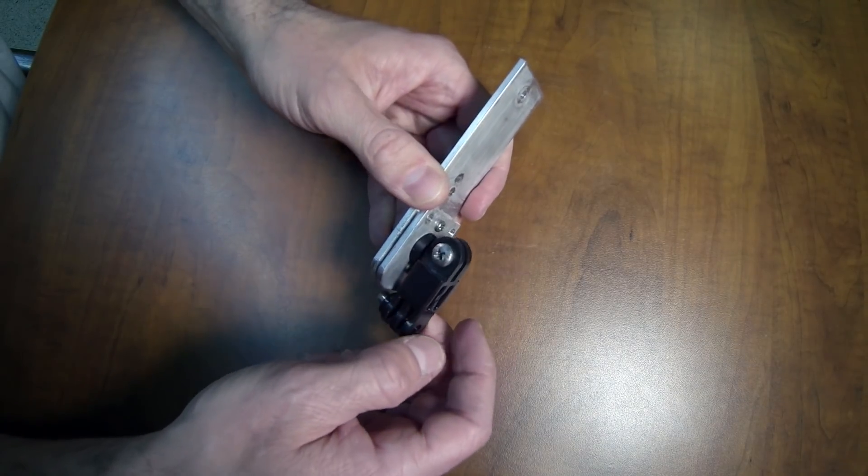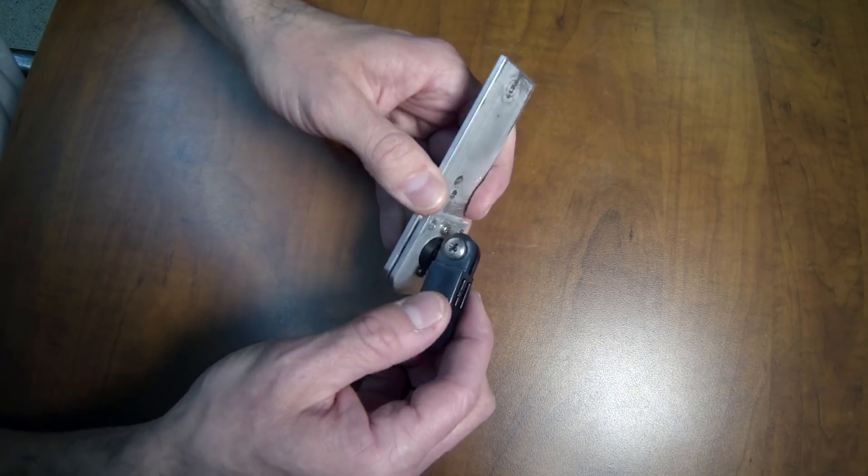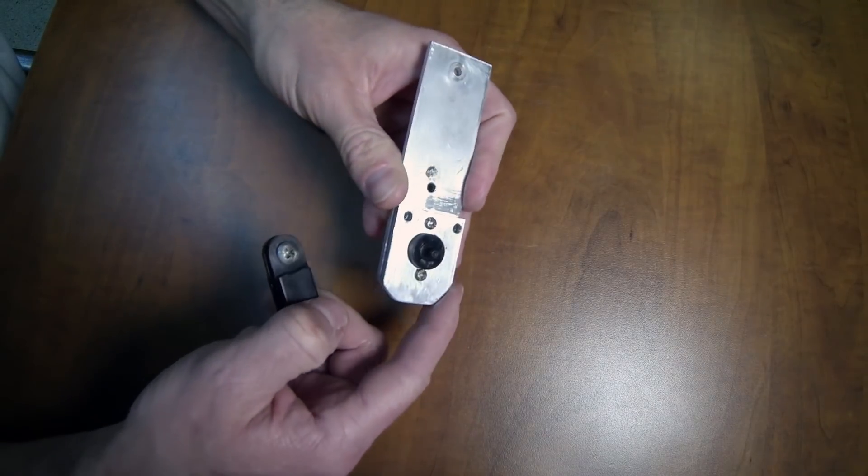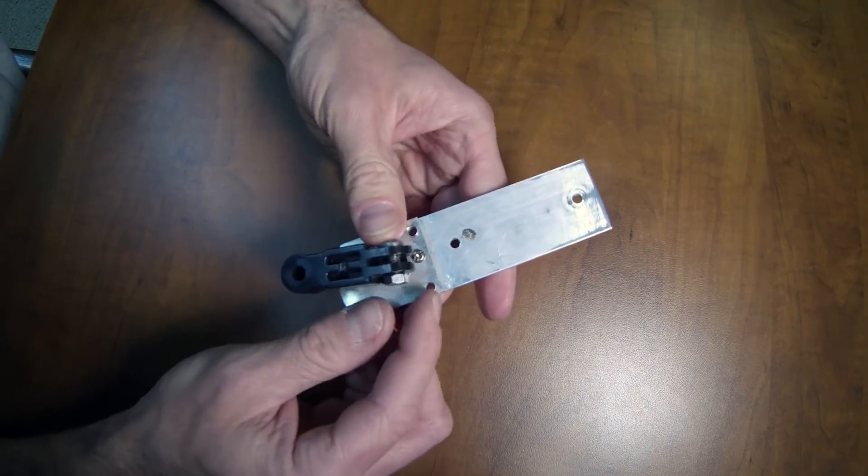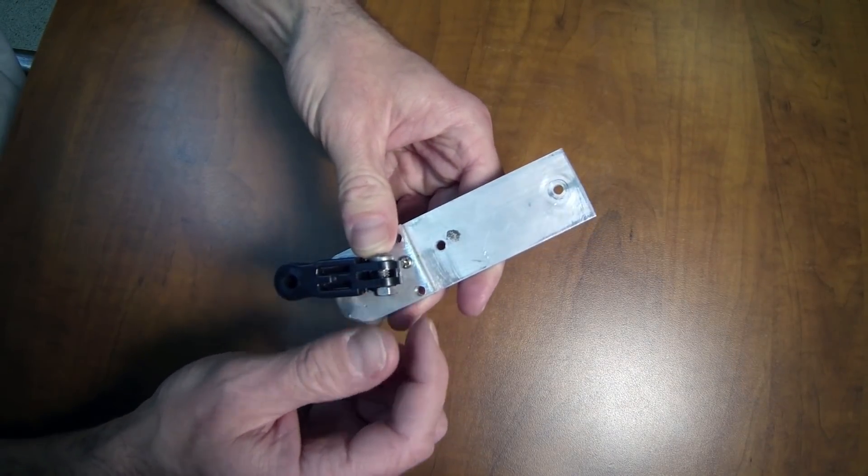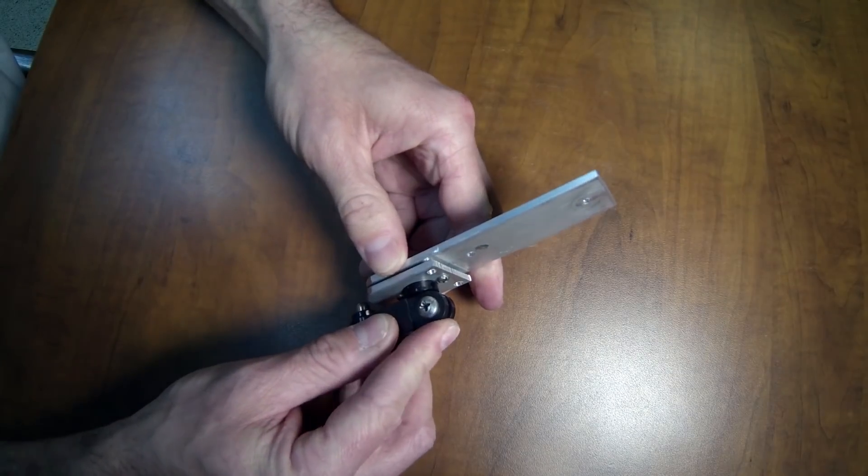It's just a smooth arc. You can see I had to remove some material down here so that it would clear this nut. And so you just put it on and then I've got a bolt and a nut and you just tighten it up and that keeps it on there.